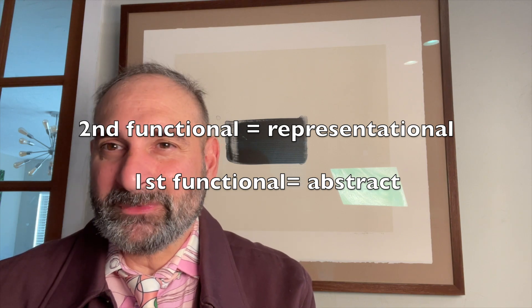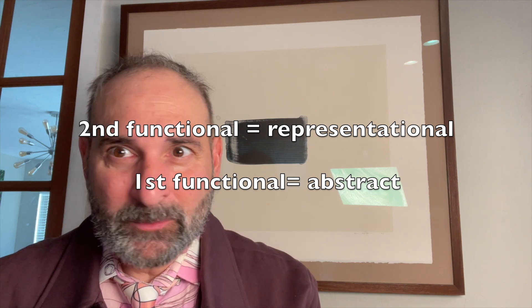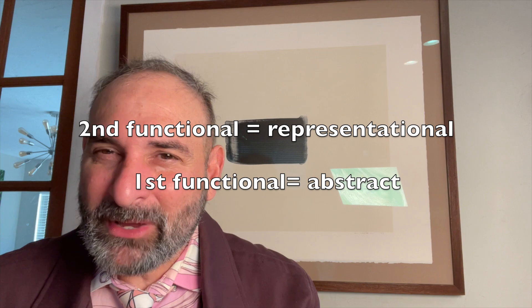Some of you would say you heard this in choreography class, where we dealt with works of art that were either representational — where they meant something, which we termed the second function — or they were abstract. If they were highly abstract, we would say that they were first functional. Now we're going to take those terms apart.